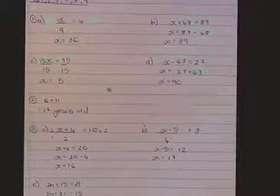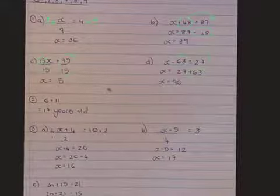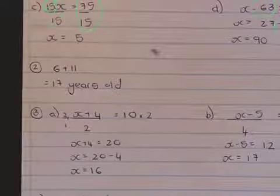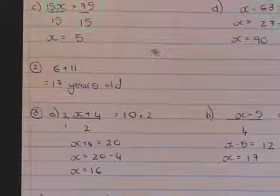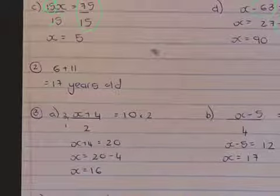For number two, Tandi is 6 years older than Maleni. Maleni is 11 years old. How old is Tandi? So here you don't need x's or anything, you just need to think what this is asking. Maleni is 11. Tandi is 6 years older. So 6 plus 11 is 17 years old.